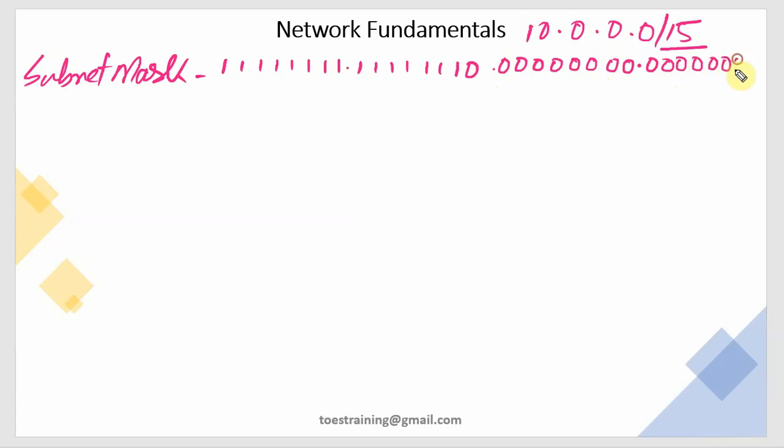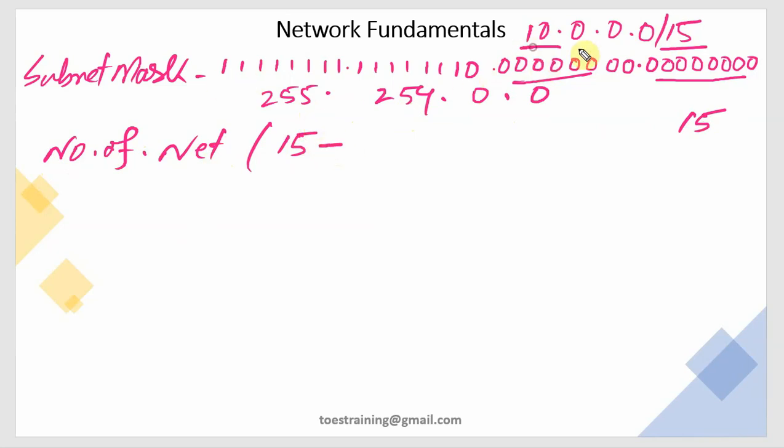This gives us 255.254.0.0. Now for the number of networks. Number of networks: the prefix is 15, but this is a Class A IP.